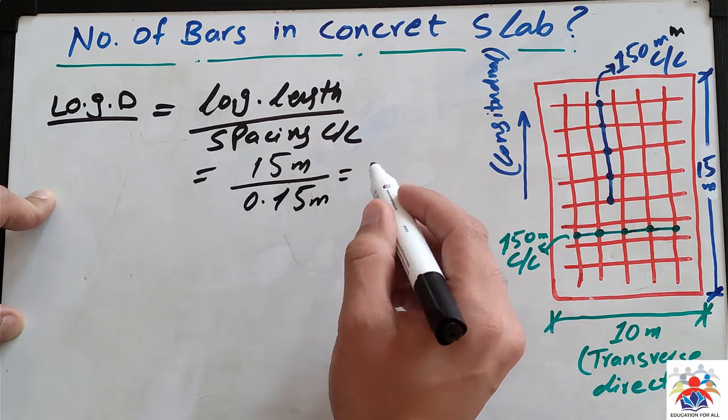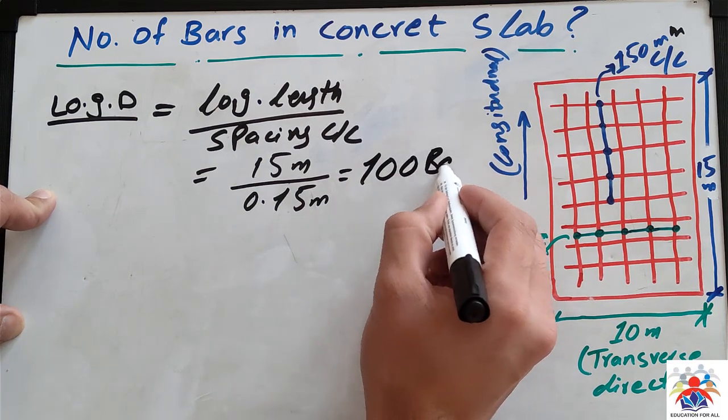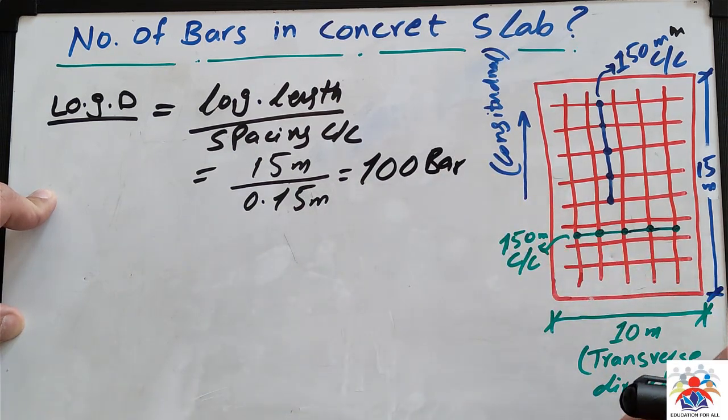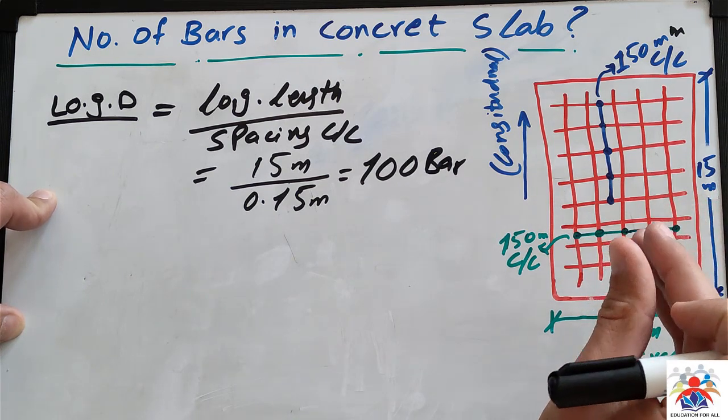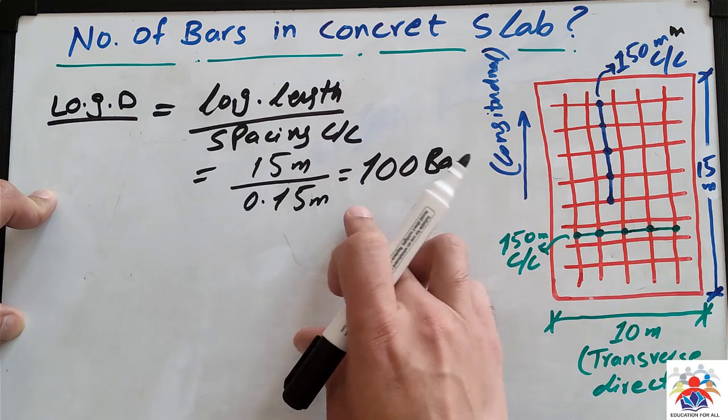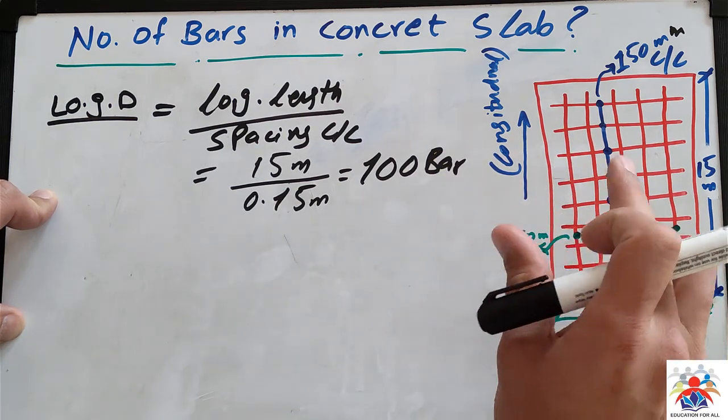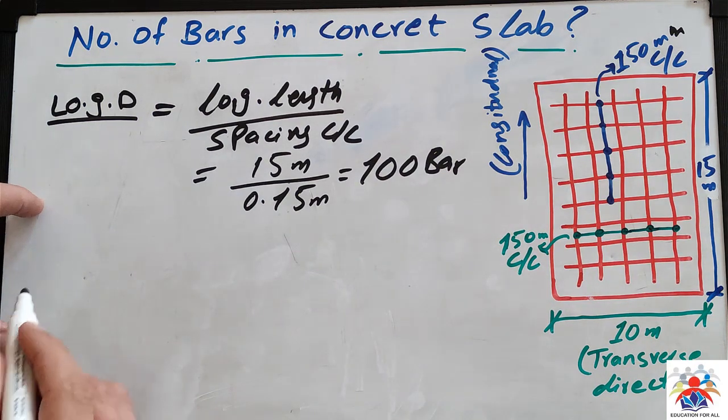And the final answer would be 100 bars. So in the direction of 15 meter if we place our bars at 150 millimeter we will need 100 bars in longitudinal direction. So now moving on to transverse direction.